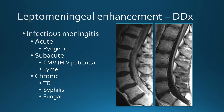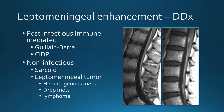The differential diagnosis for leptomeningeal enhancement includes infectious causes: acute pyogenic meningitis (though spine imaging is not usually done for this), subacute meningitis such as CMV and Lyme disease (CMV usually in HIV patients), or more chronic meningitis such as tuberculosis, syphilis, or fungal disease. Post-infectious immune-mediated processes include Guillain-Barré syndrome and its more chronic form CIDP. Non-infectious causes include sarcoid and leptomeningeal tumor — either hematogenous metastases, drop metastases from brain tumor, or lymphoma.